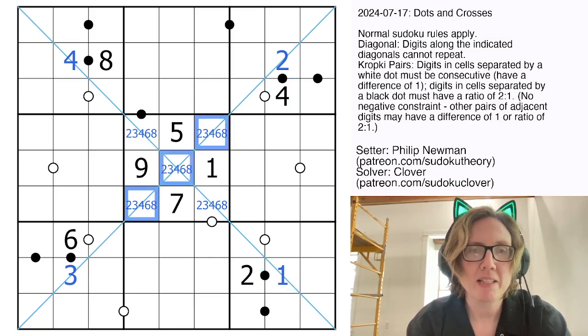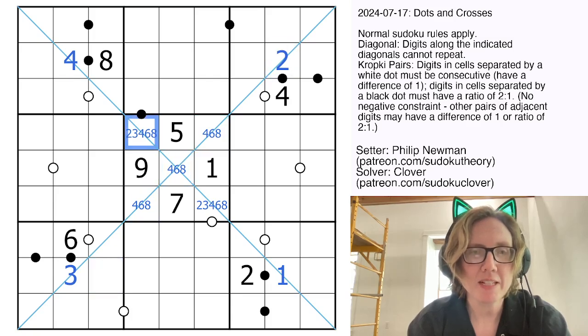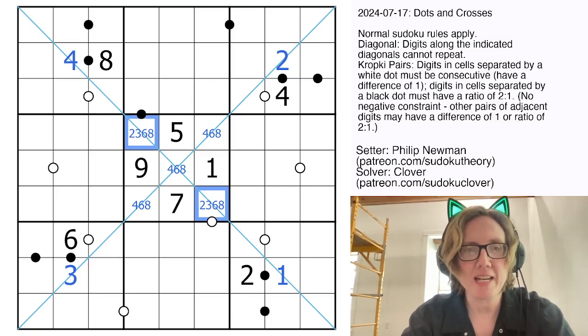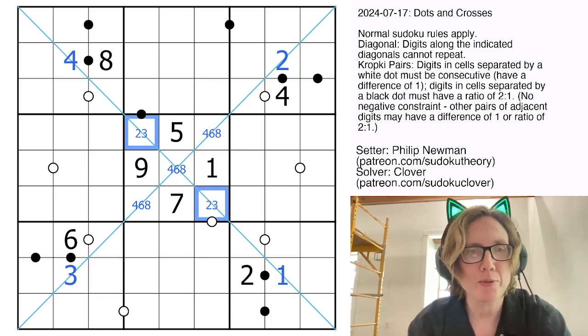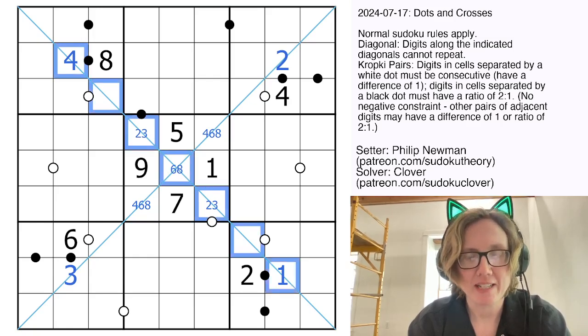So that lets me eliminate 2 and 3 from these cells on the diagonal, since they can't repeat. And so I can eliminate 4, 6, and 8 from these cells and make this a 2, 3 pair, which is a lot nicer looking than what I had before.